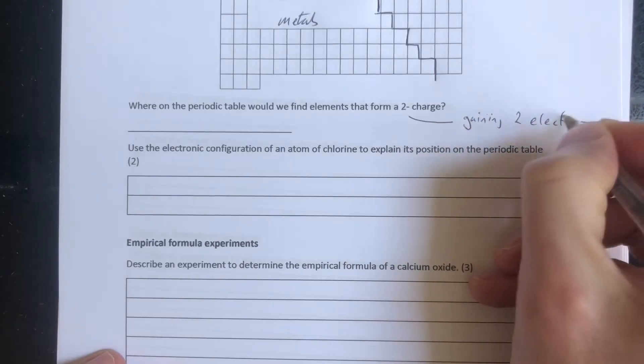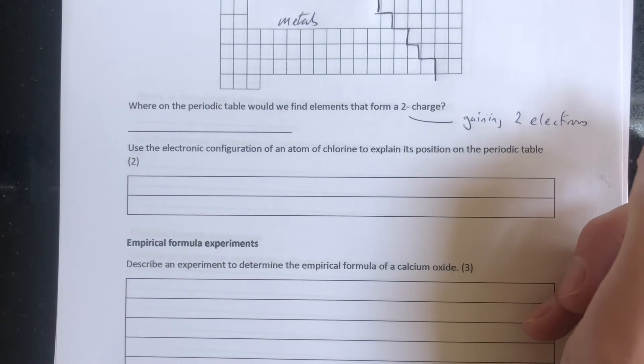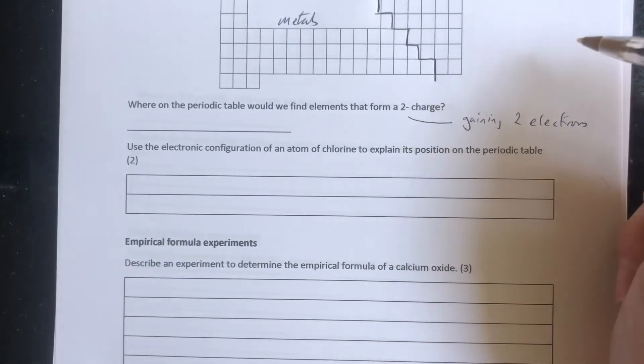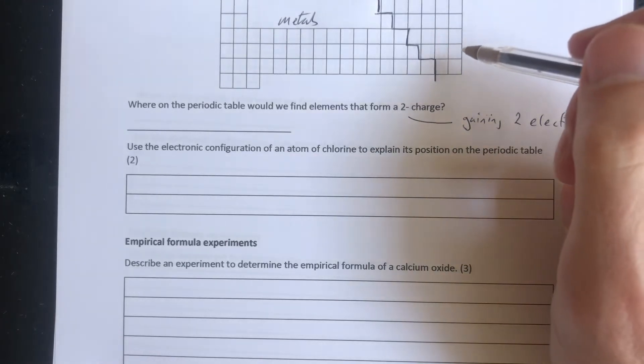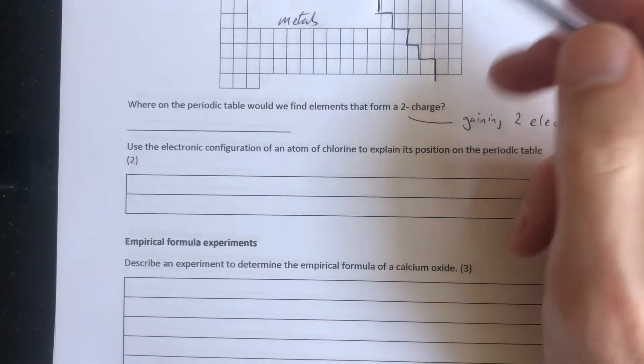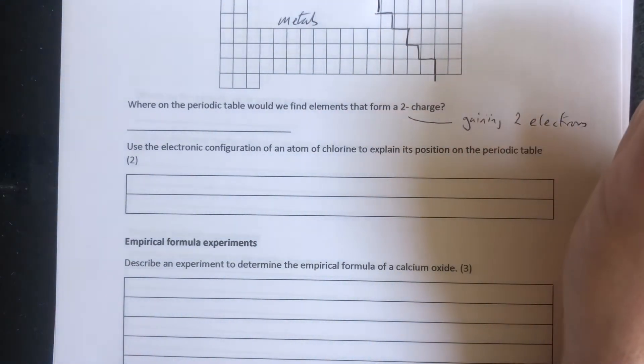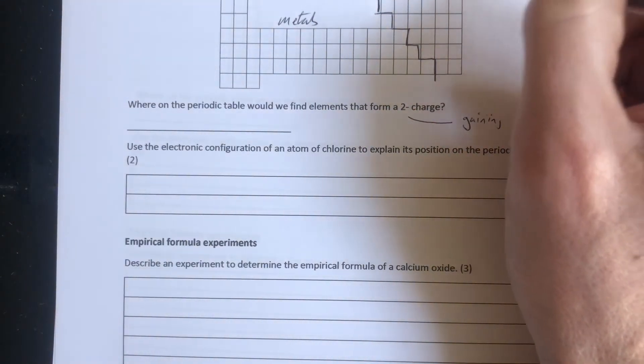Electrons are negatively charged, so it's gained two electrons. So what we need is an element that needs two electrons. Well, elements that need two electrons will have six electrons on their outer shell, because a full shell would be eight electrons.